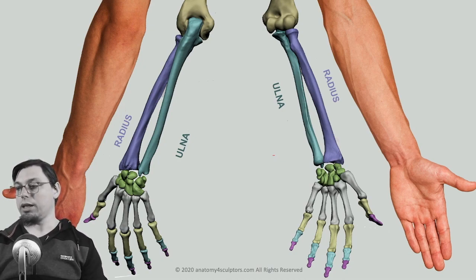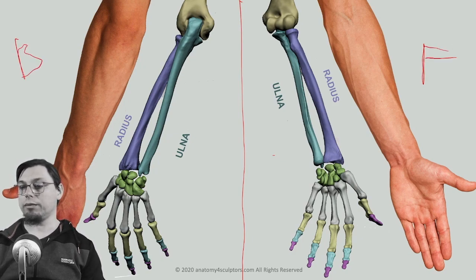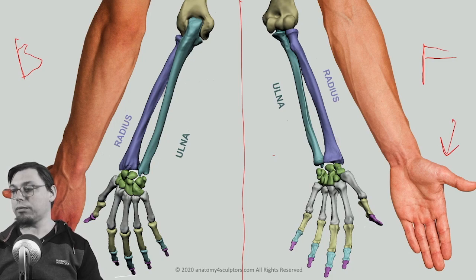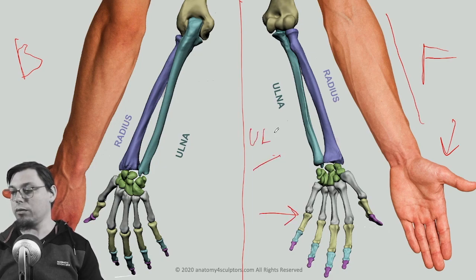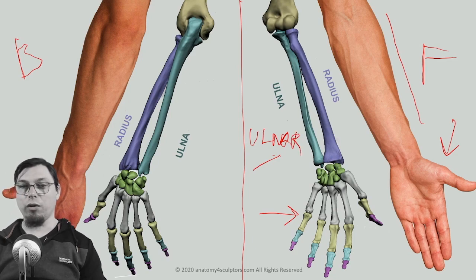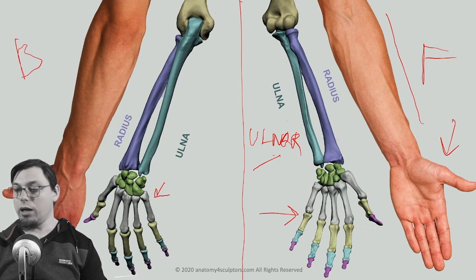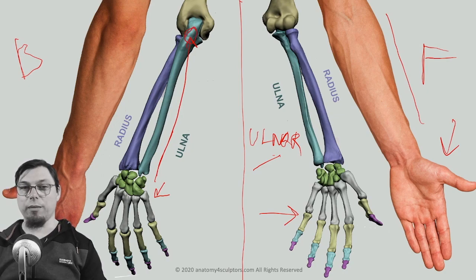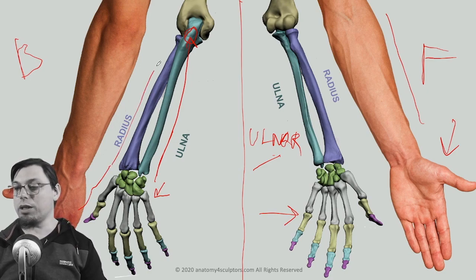Here we have a left arm seen from the front and from the back. We can see the thumb — that's the radial side — and the pinky finger, which is the ulnar side. From the back it's the same: the little finger is the ulnar side. The ulna runs from the pinky all the way up to the olecranon, which we already know is the elbow.